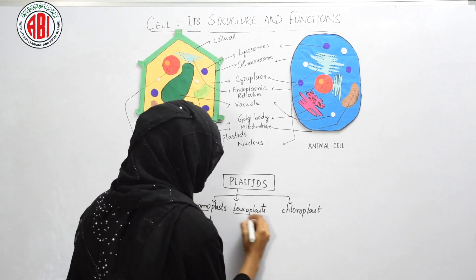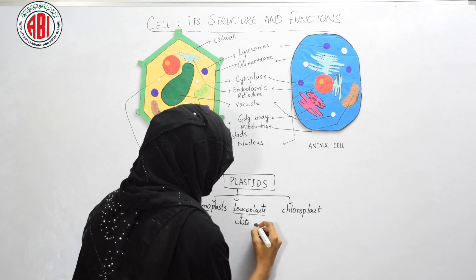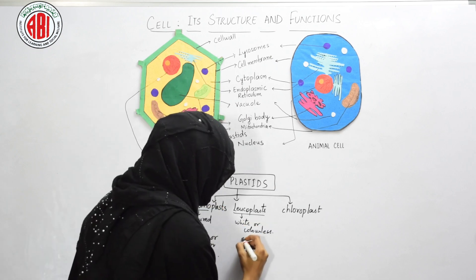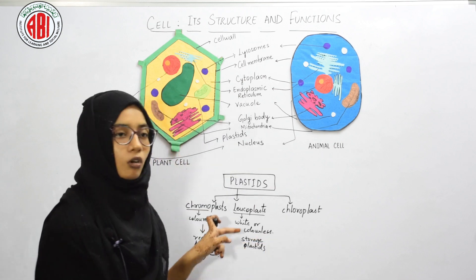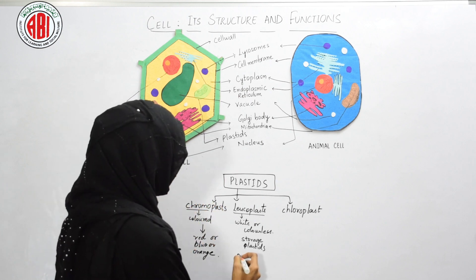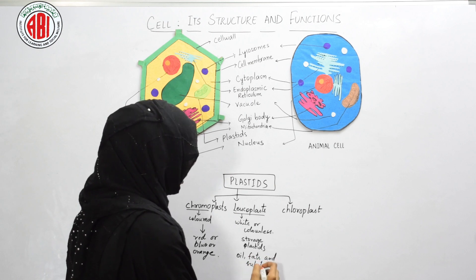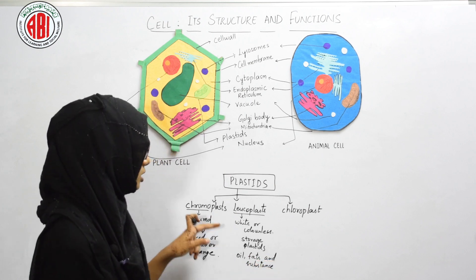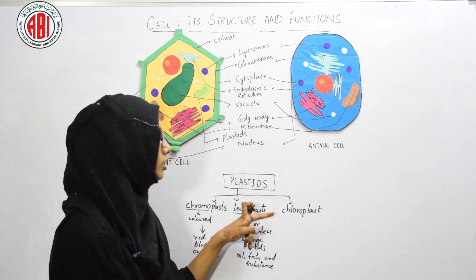The next type is leukoplasts. 'Leuko' means white or colorless, so these are also called storage plastids. They are called storage plastids because they store oils, fats, and other substances. The next and very important type is chloroplasts, which are present in the green parts of the plant.